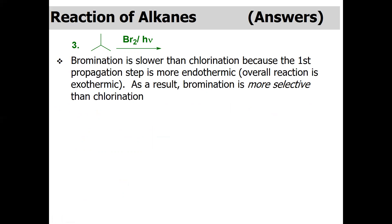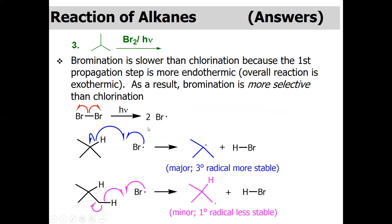For the bromination of 2-methylpropane: bromination is slower than chlorination because the first propagation step is more endothermic, making bromination more selective. Bromine cleaves homolytically to give a bromine radical, which then reacts with 2-methylpropane to produce the very stable three degree free radical. This three degree radical then reacts with bromine to give 2-bromo-2-methylpropane as the major product.